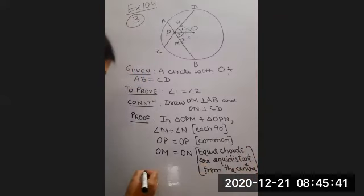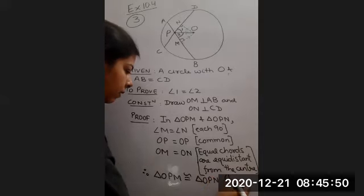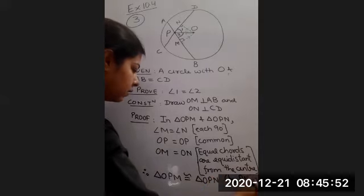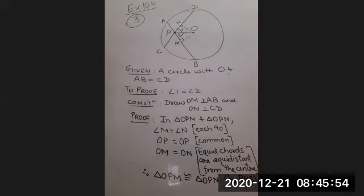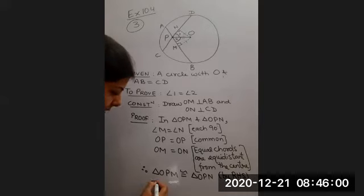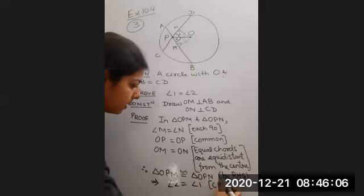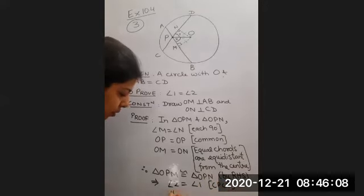So therefore, triangle OPM is congruent to triangle OPN by RHS. By RHS, and this implies angle 2 is equal to angle 1, CPCT, hence proved.